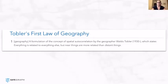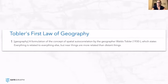Points of interest are called that because of how they relate to other things spatially. This pretty much boils down to Tobler's first law: everything is related, but nearer things are more related than other things. Use cases for POI data really all relate back to that — understanding how something else relates to those points, and that relationship is what makes them of interest.